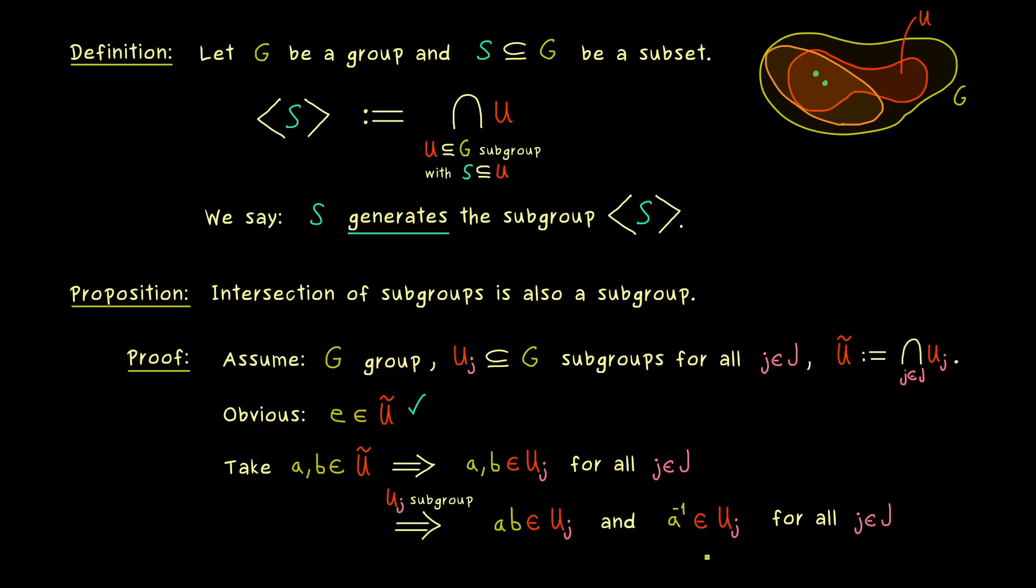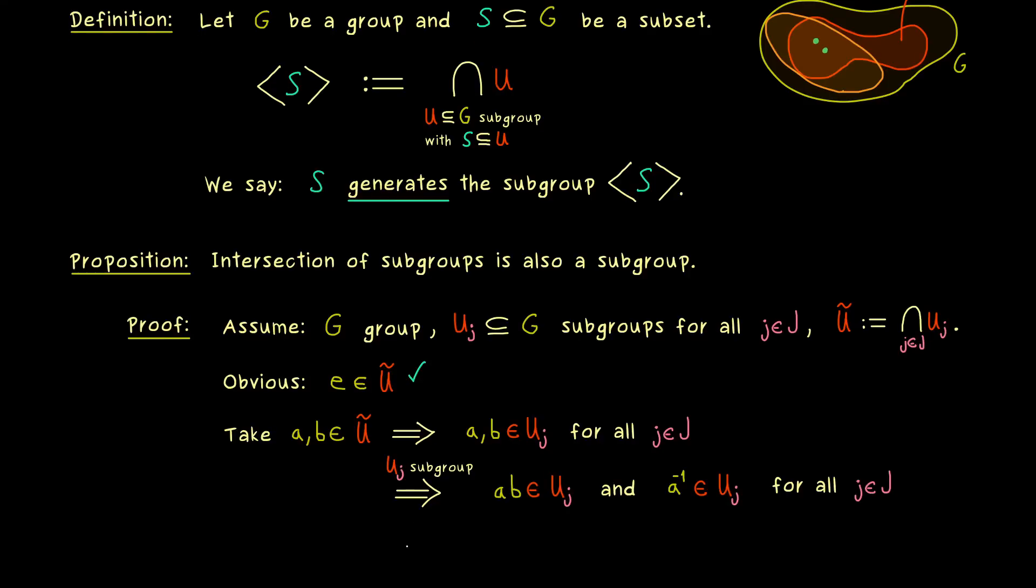And moreover we have exactly the same thing for the inverse operation, so A inverse also lies in UJ. Obviously we have the same thing for B but we don't need that because now we have this claim for every J in J. Hence by the definition of the intersection AB lies in U tilde and A inverse as well. And that's all we did. This shows us that U tilde is a subgroup. So this is a common thing to show a subgroup and you see it works in general for the intersection. And this shows us that we have indeed a subgroup in the definition above.